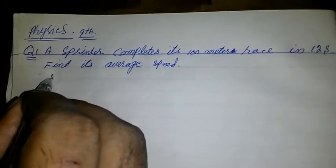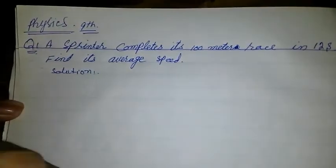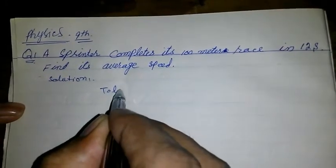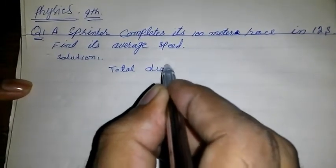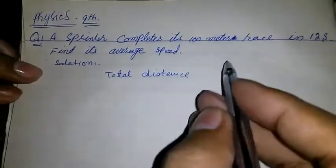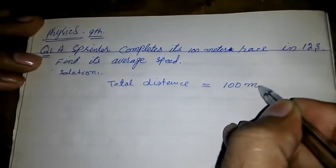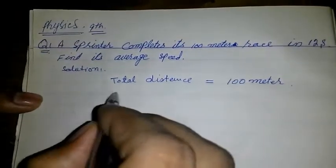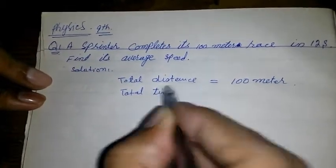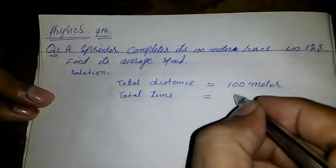Let us solve this question. In the data, it gives total distance is equal to 100 meter. Total time in which sprinter completes its race, 12 seconds.